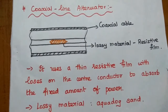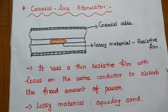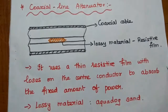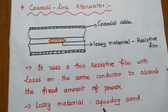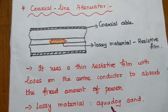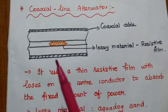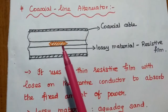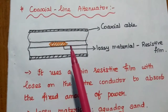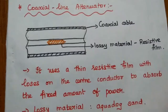Attenuation is nothing but loss. The type of lossy material we are going to use is majority aqua-dag type of sand. Since it is a fixed type, it can produce a fixed amount of attenuation.